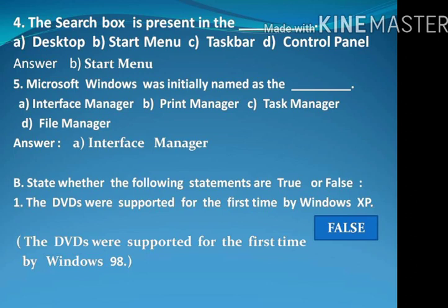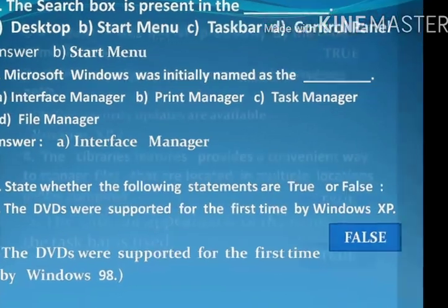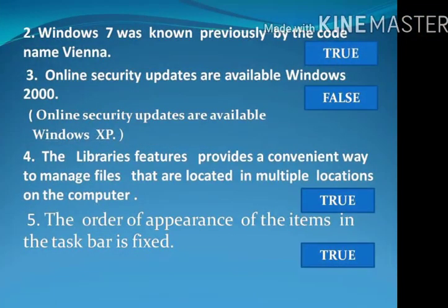Question number B: State whether the following statements are true or false. Question number 1: The DVDs were supported for the first time by Windows XP. Answer: False. The DVDs were supported for the first time by Windows 98. Question number 2: Windows 7 was known previously by the code name Veena. Answer: True.